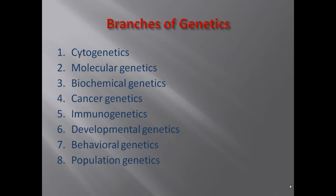There are many branches of genetics: cytogenetics, molecular genetics, biochemical genetics, cancer genetics, immunogenetics, developmental genetics, behavioral genetics, and population genetics. Cytogenetics studies the cellular level; molecular genetics studies genetics at the molecular level; and similarly for biochemical, cancer, immunogenetics, developmental, behavioral, and population genetics.